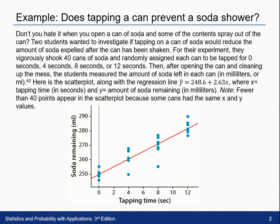For their experiment, they vigorously shook cans of soda and randomly assigned each can to be tapped for 0 seconds, 4 seconds, 8 seconds, or 12 seconds. Then, after opening each can and cleaning up the mess, the students measured the amount of soda left in each can.